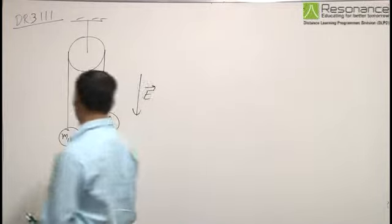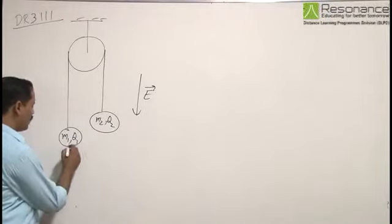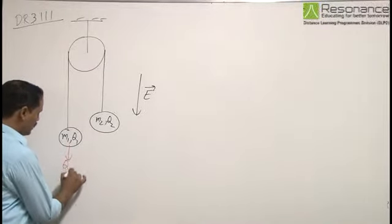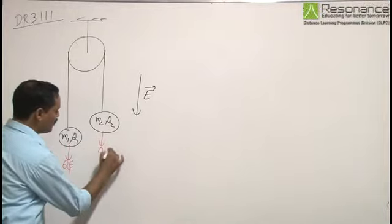As the electric field is acting downward, the charged particles will experience downward forces. This is Q1E and this will experience Q2E.